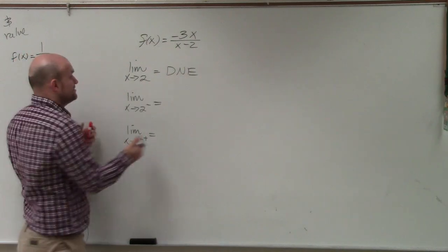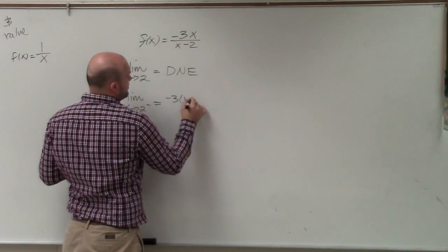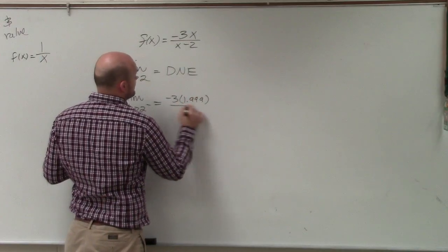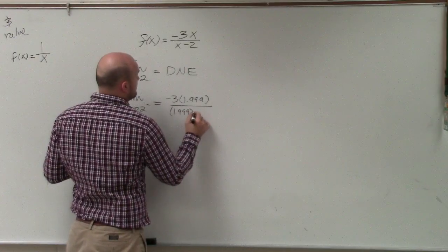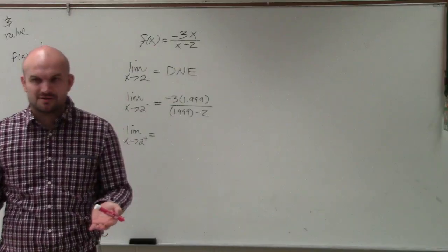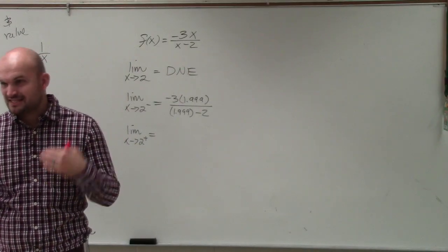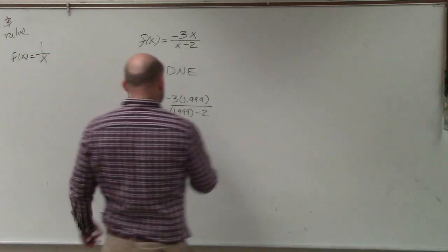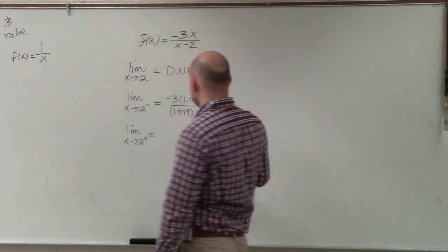1.999, right? So let's evaluate this for 3 times 1.999 divided by 1.999 minus 2. Now, before you grab out your calculators, we don't need to grab out our calculators. We just want to be able to determine what is that value as it's getting really close.